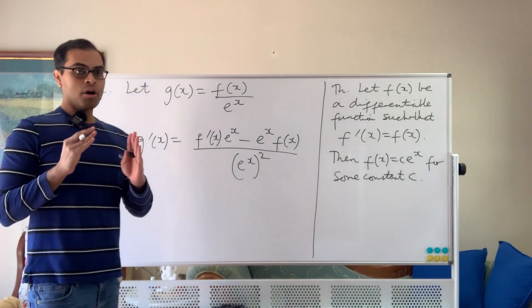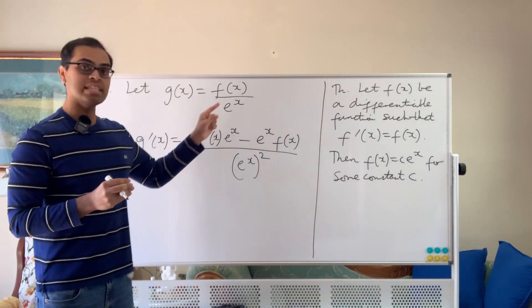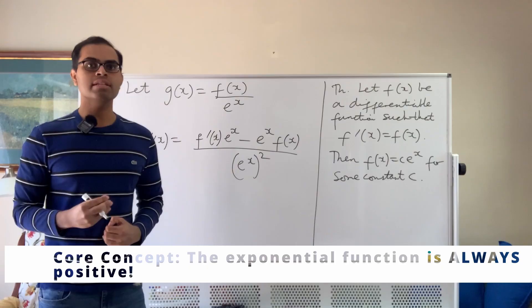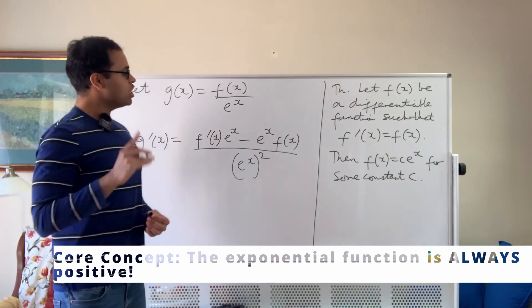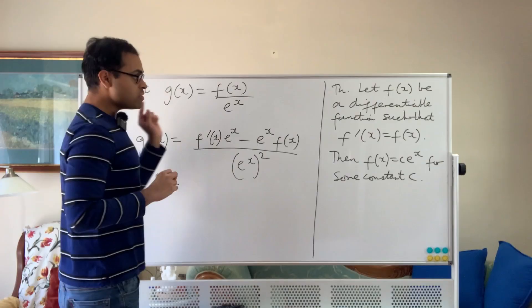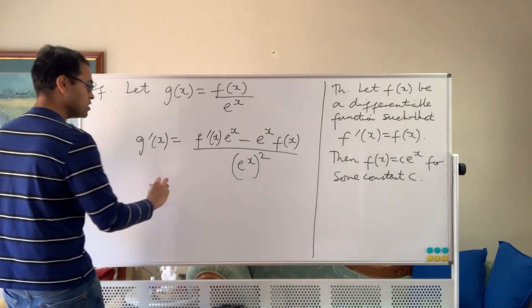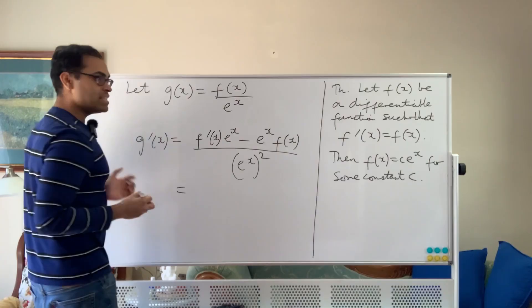Now one quick comment before I dive into it is g of x is a well-defined function because e to the x is never zero. So you can divide by e to the x and get a well-defined function, so that's all okay. And now what we can do is we can see that because of our assumption that f prime was equal to f, right, f is its own derivative,